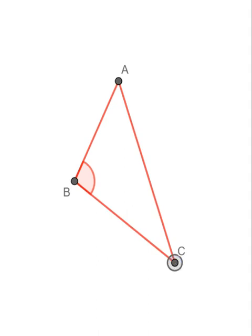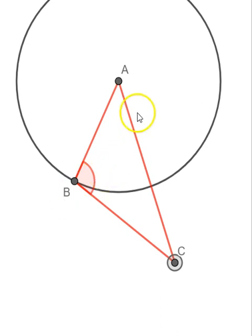Now the trick is something like this. We draw a circle with center as A and AB as the radius. We get an intersection between the circle and AC. So let's call that point as D.